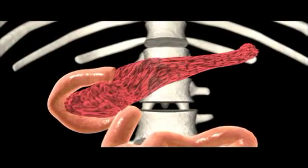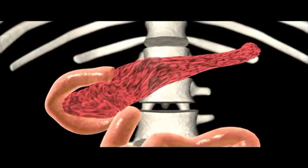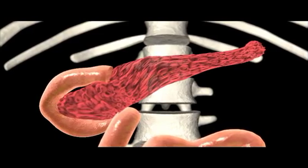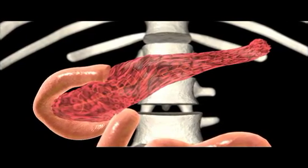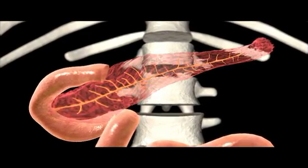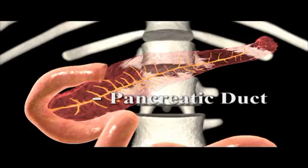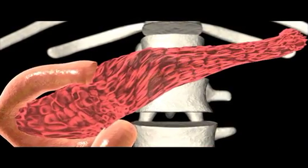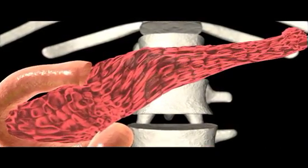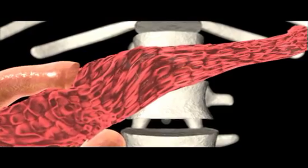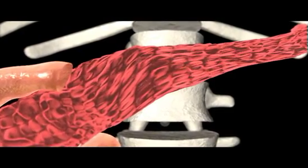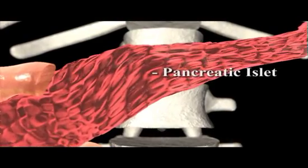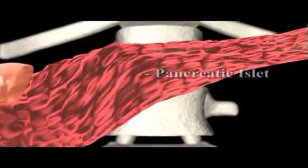The pancreas consists largely of exocrine tissue that produces digestive juices released into the small intestine via the pancreatic duct. However, endocrine cells are scattered throughout the pancreas in about two million cell clusters called pancreatic islets, or islets of Langerhans.